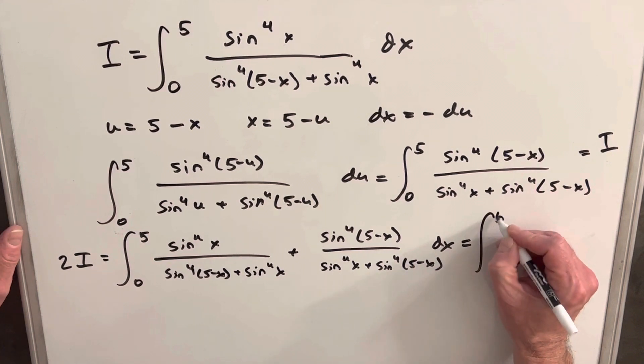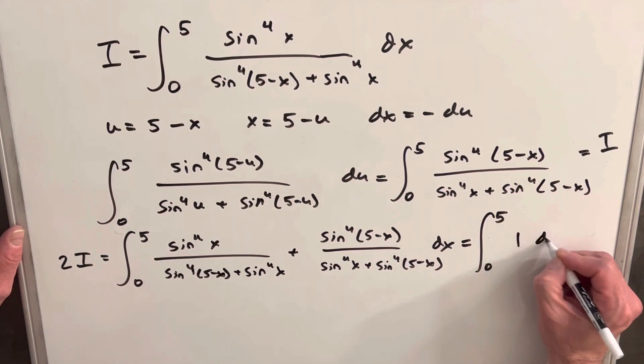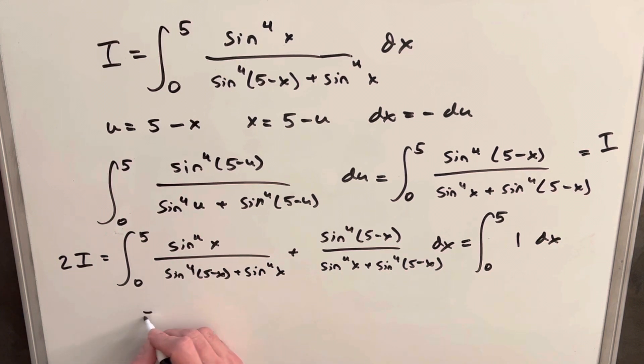So when we add these together, we're going to have the integral from 5 to 0 of just 1 dx. And of course we know what the integral of 1 is, that's just going to be x evaluated from 5 to 0. Plugging that in, we end up with 5 minus 0, and that's just 5.